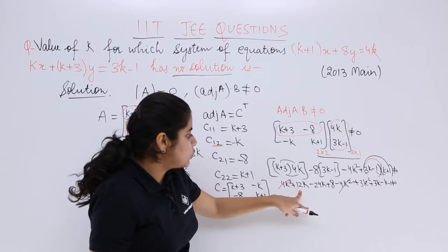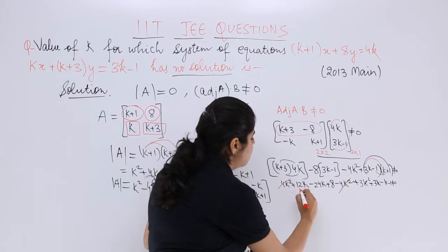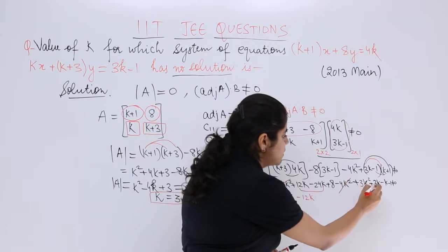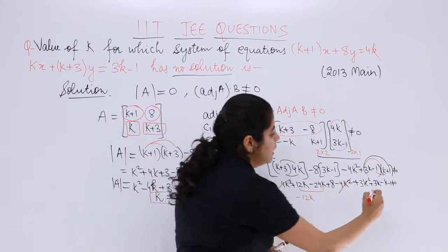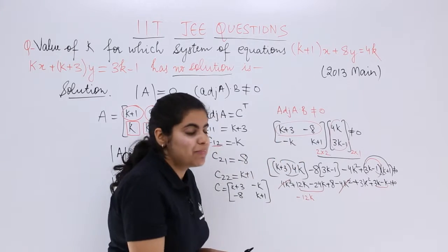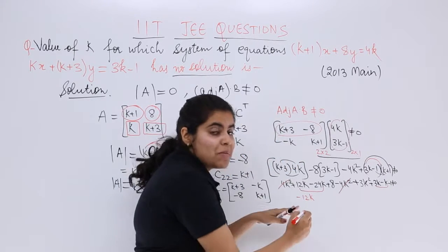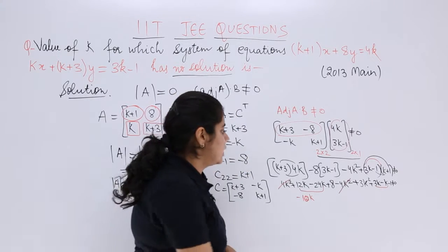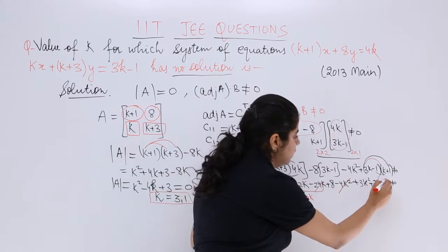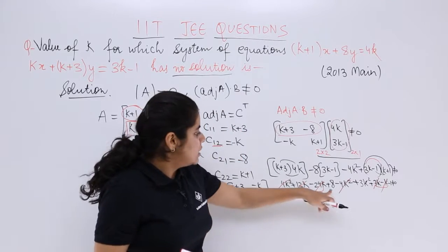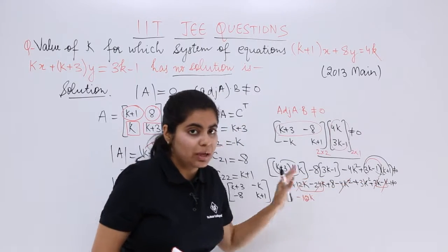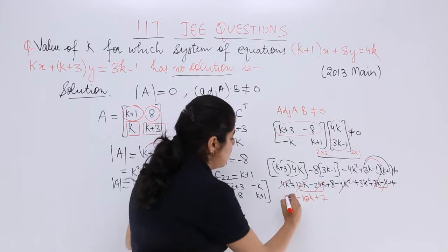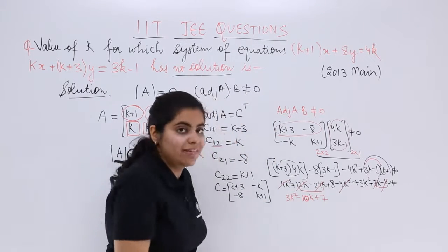Next: 12k - 24k = -12k. Plus 8 plus 3k². This is +3k - k, so +2k. Then -12k + 2k = -10k. Plus 8 minus 1 = +7. Plus 3k². So we have 3k² - 10k + 7 ≠ 0.